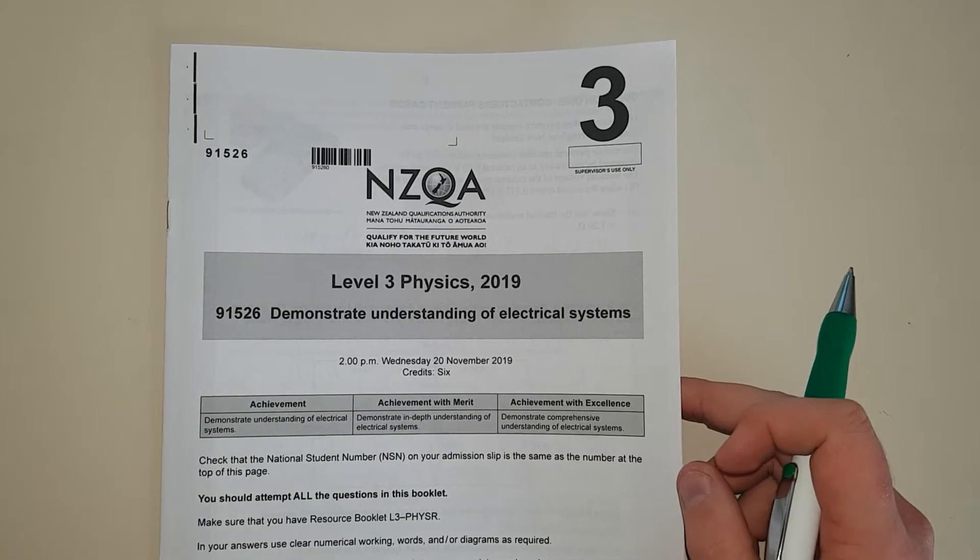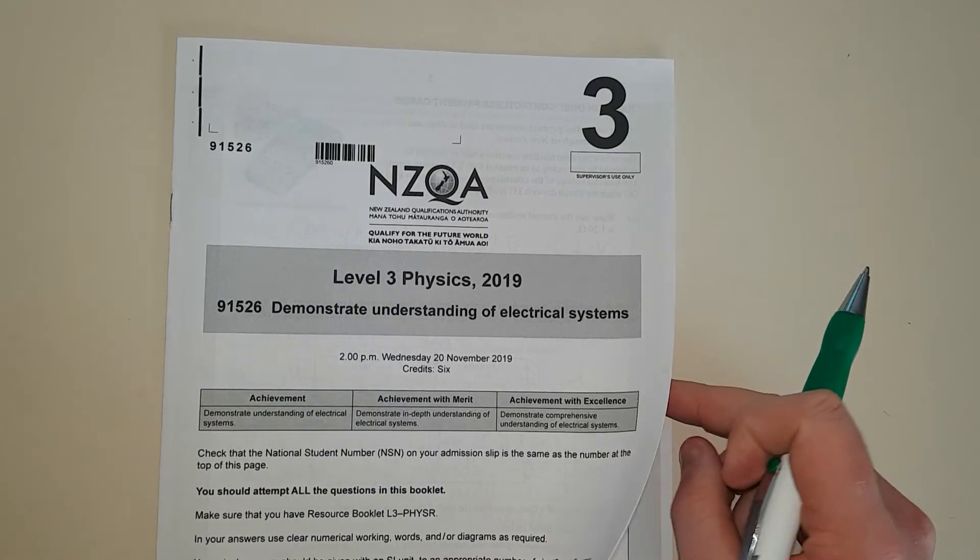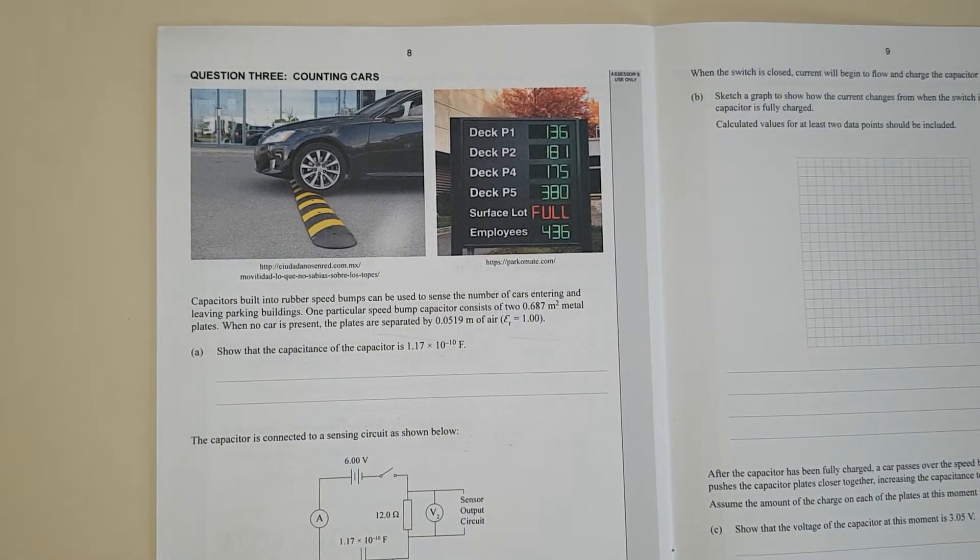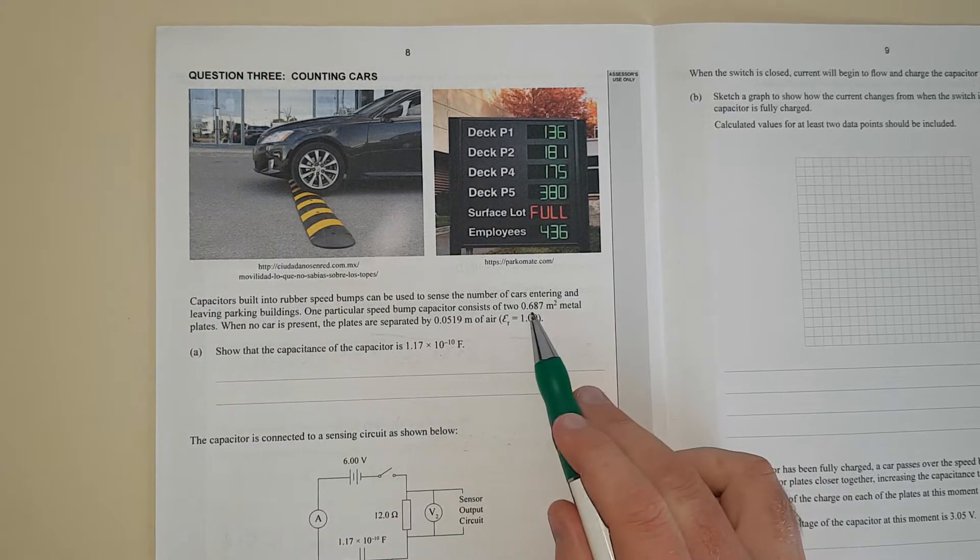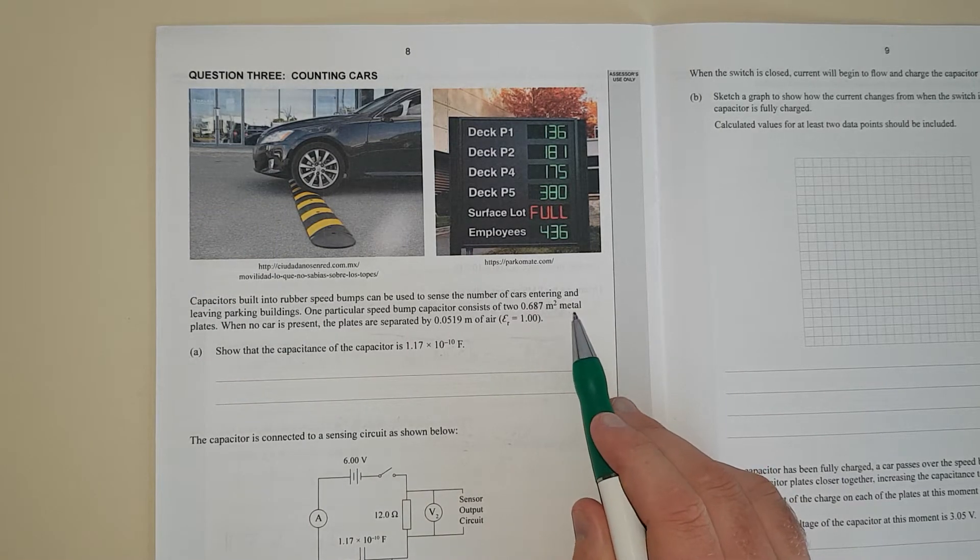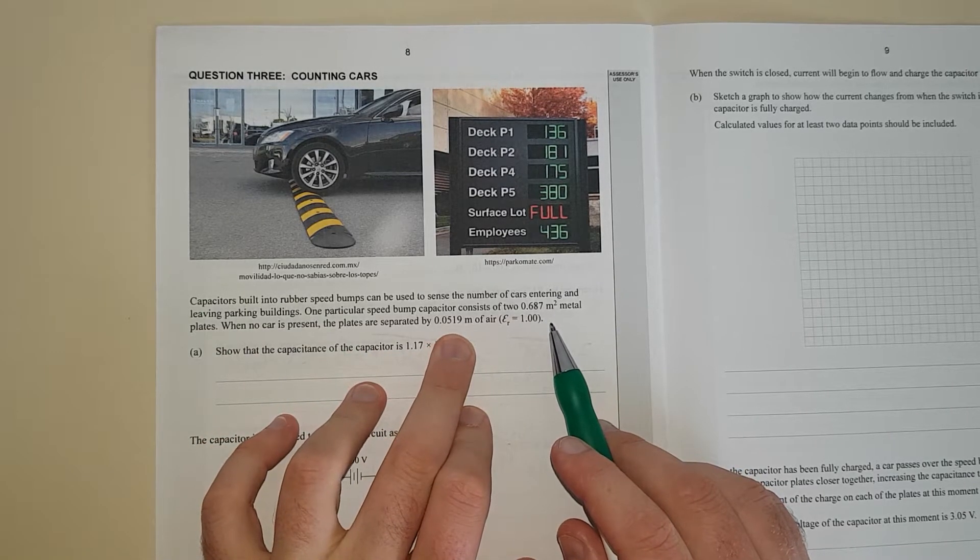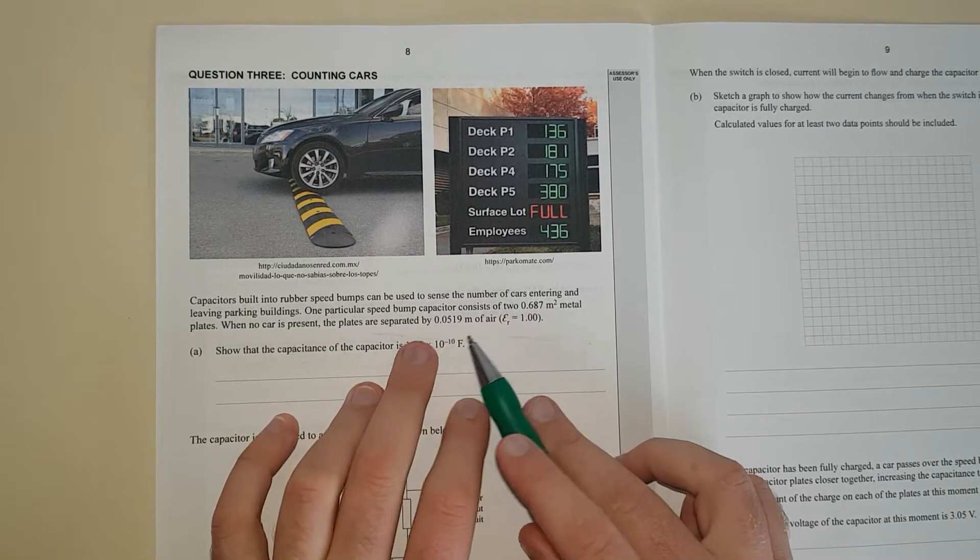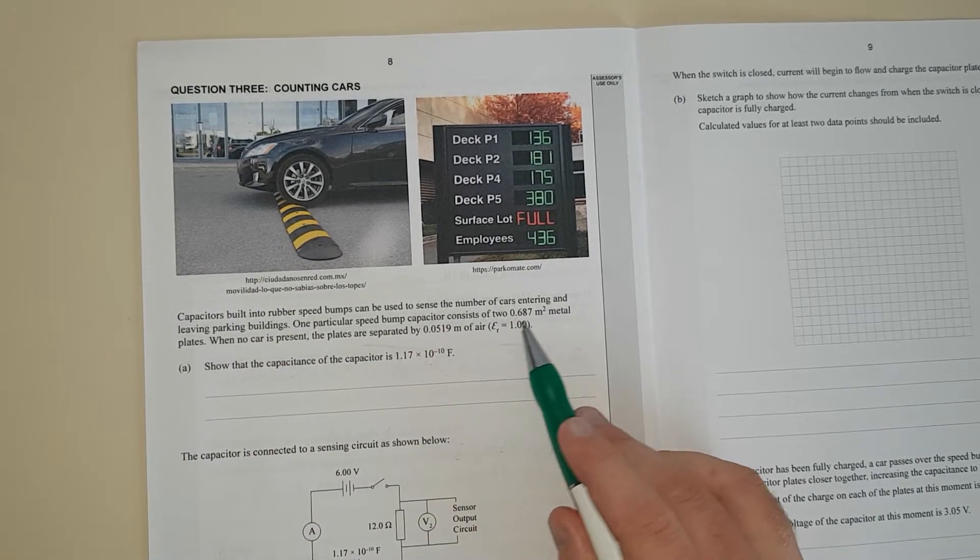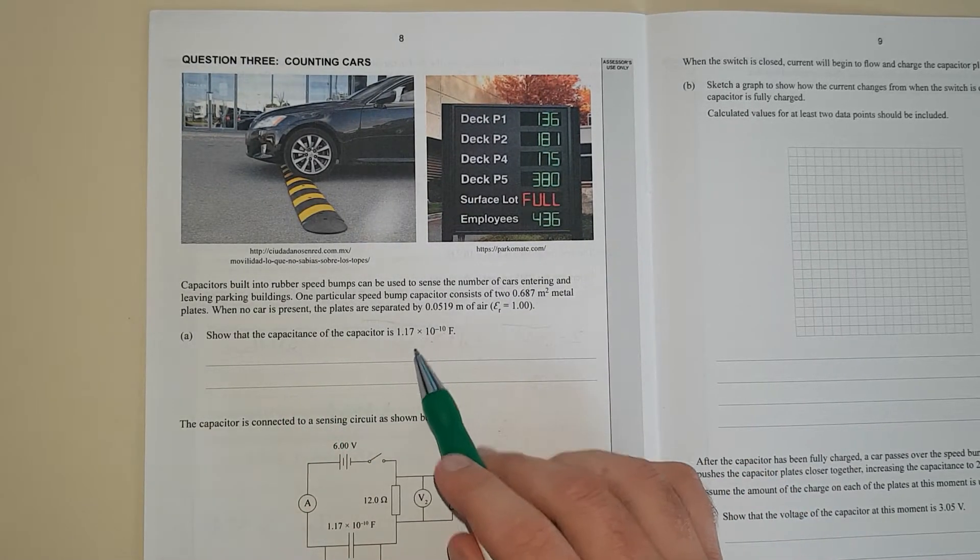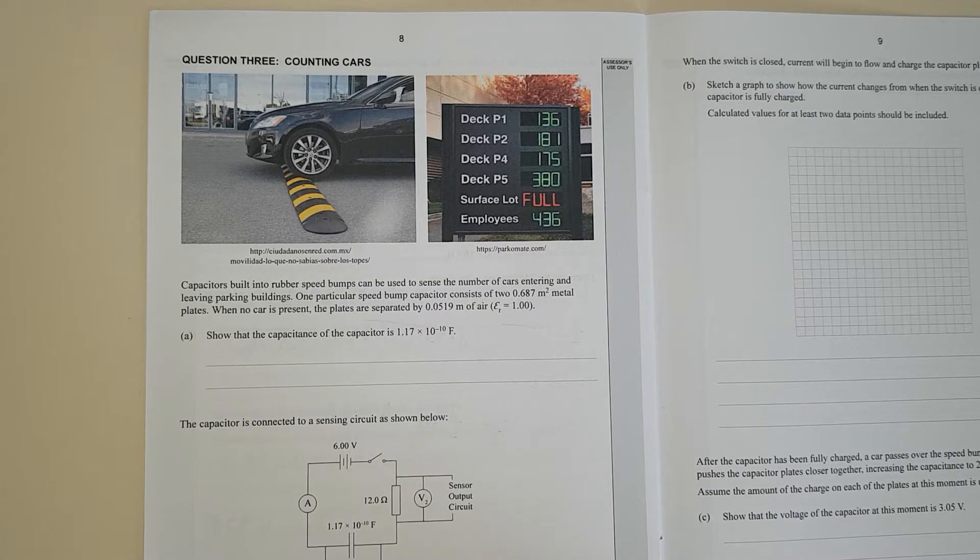2019 electricity exam question 3. Right, so we've got capacitors built into rubber speed bumps can be used to sense the number of cars entering and leaving parking buildings. One particular speed bump consists of 0.687 m² metal plates. When no car is present the plates are separated by 5.19 cm or 0.0519 m and the dielectric is just air which means it has a constant of 1. Show the capacitance of the capacitor is 1.17 times 10 to the negative 10 farads.